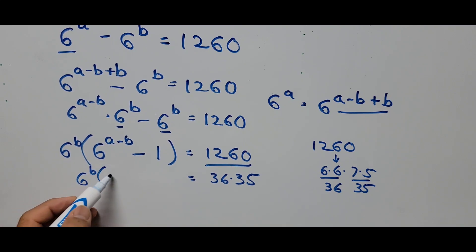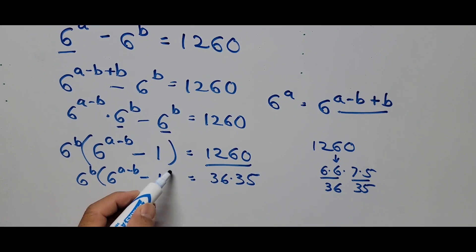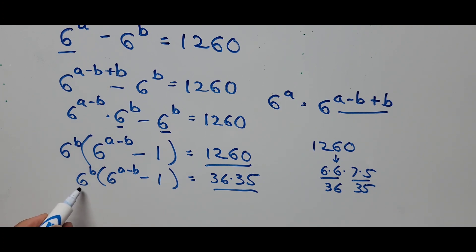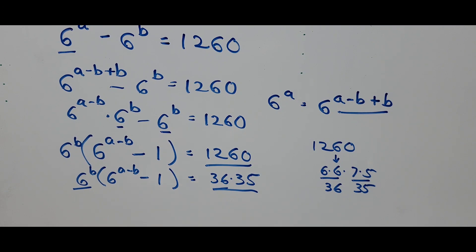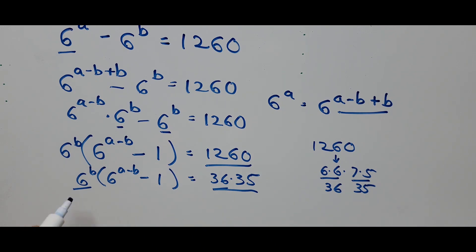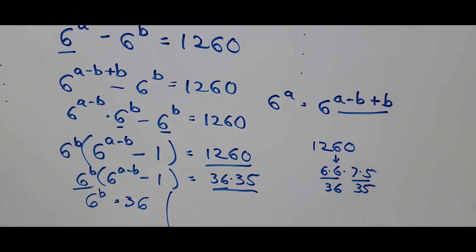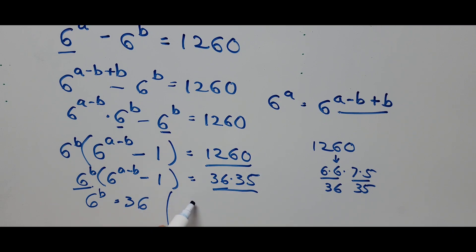On the left side we have 6 to the power B times the quantity 6 to the power A minus B minus 1 equals 36 times 35. By comparison, we equate 6 to the power B to 36. Since 36 is 6 squared, we can write 36 as 6 squared. We also equate 6 to the power A minus B minus 1 to 35.